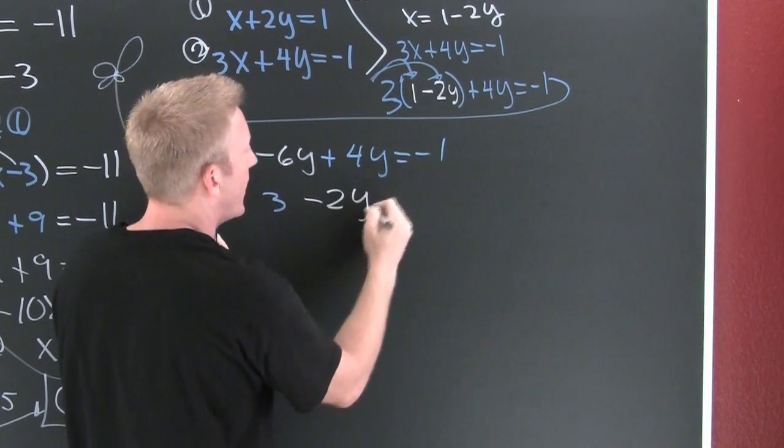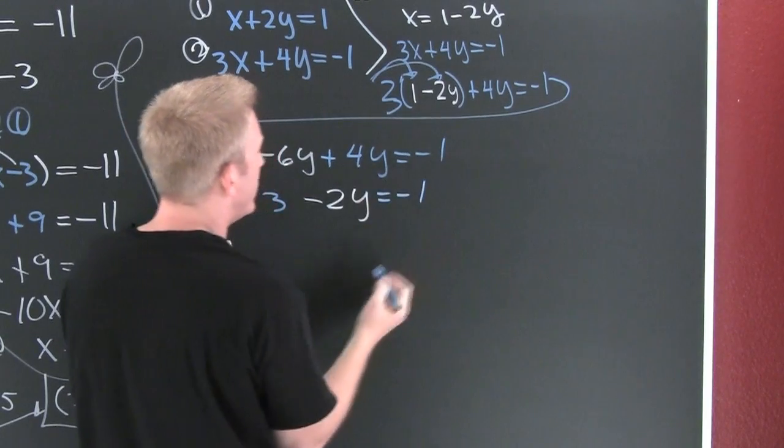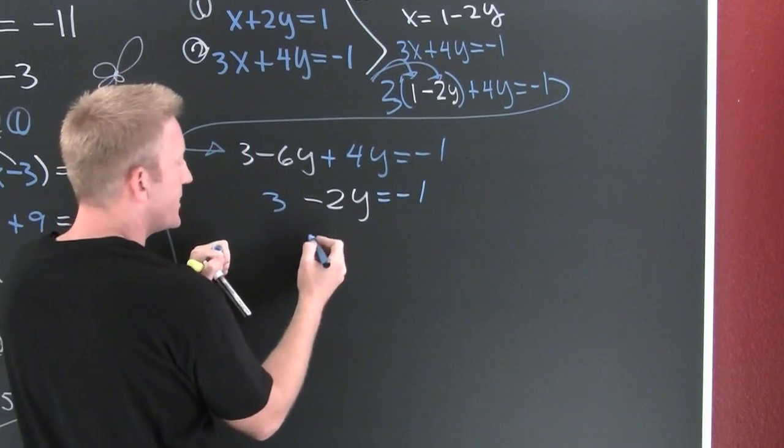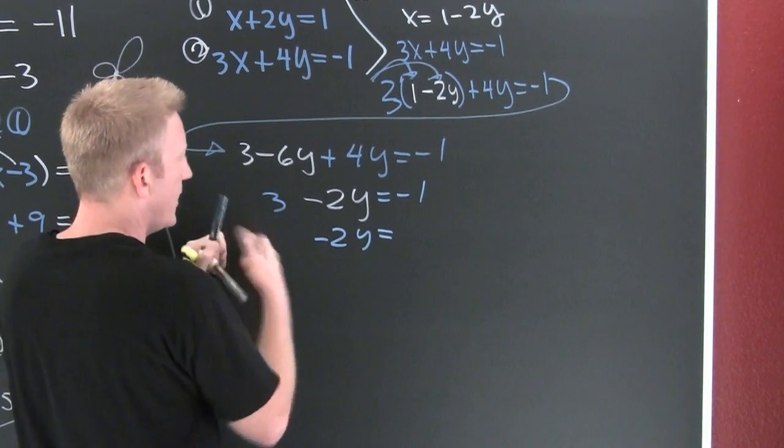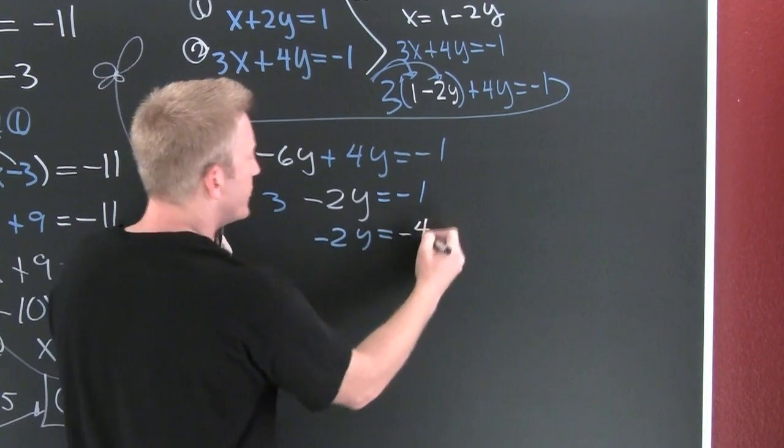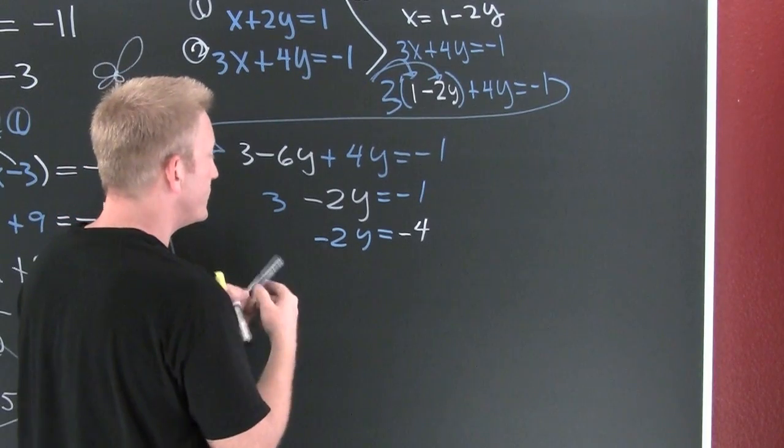Minus 2y is minus 1. Subtract that 3 off both sides and then you got minus 2y is minus 4. Finish him. Divide both sides by 2 and then my y gonna turn out to be 2.